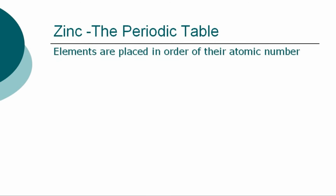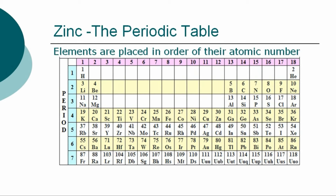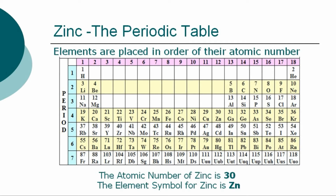The periodic table is a chart showing the symbols and the atomic numbers of all known elements, such as zinc, in one large grid. The chemical elements of the periodic table are placed in order of their atomic numbers. Atomic numbers increase as you move across a row, called a group, or down a column, called a period. The atomic number of zinc is 30, and the element symbol for zinc is Zn.